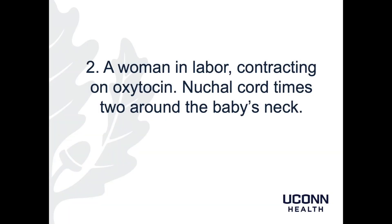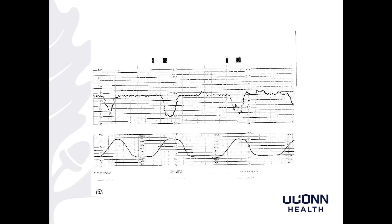Patient number 2: a woman in labor contracting on oxytocin. There is a nuchal cord times 2 around the baby's neck. My read of this tracing: baseline of 140s, moderate variability, accelerations are present. There are positive recurrent variable decelerations, and that would make this a Category 2 tracing.